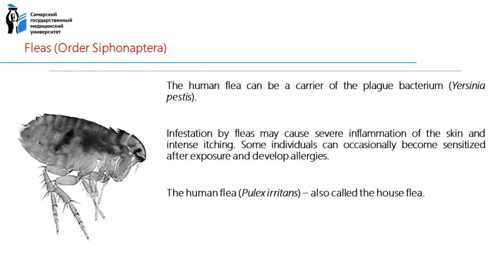Some individuals may become sensitized after exposure and develop allergies. Plague, a disease that affects humans and other mammals, is caused by the bacterium Yersinia pestis. The human flea can be a carrier of the plague bacterium. Without prompt treatment, the disease can cause serious illness or death. Today, human plague infections continue to occur in the western United States, but significantly more cases occur in parts of Africa and Asia.